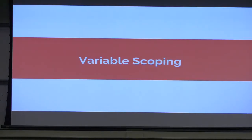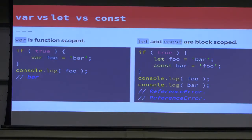Next, we're going to jump into variable scoping. Everyone's probably familiar with var. You initialize a variable, set it equal to a value, console.log it, and you get it. Var is function scoped. What that means is if I have a function, it's not going to leak out of that function, but if I have a block, it can leak out of the block.